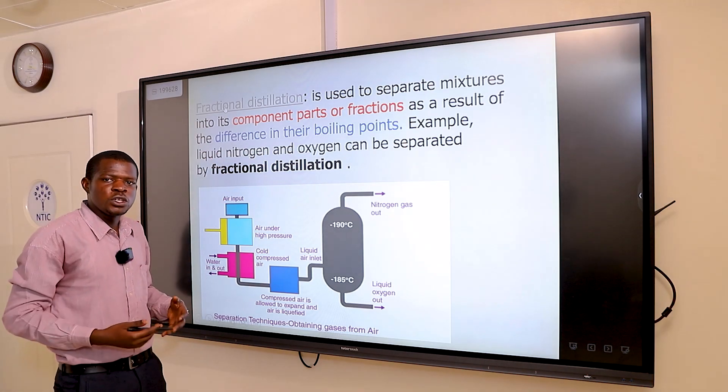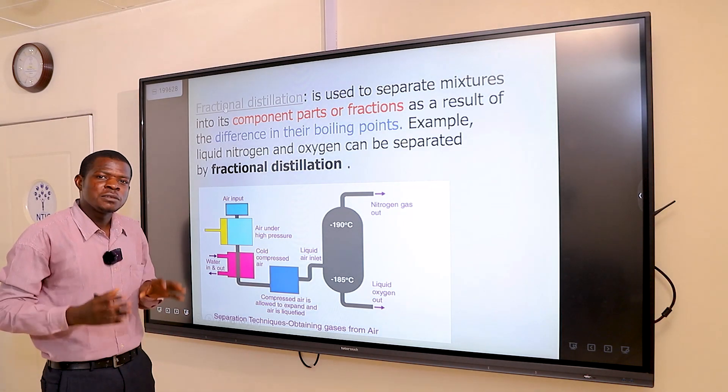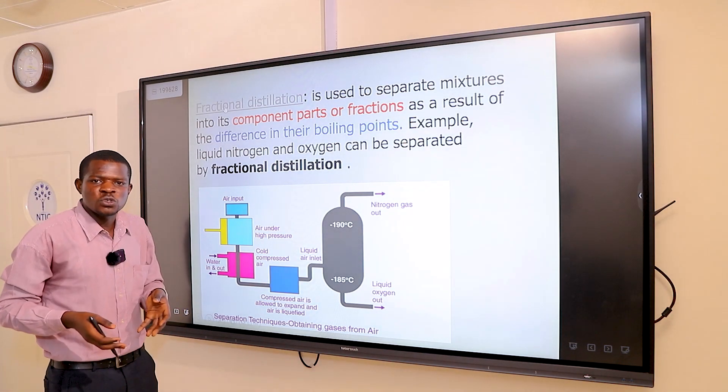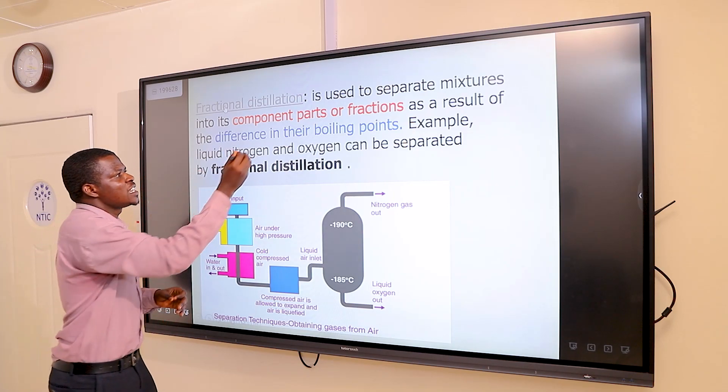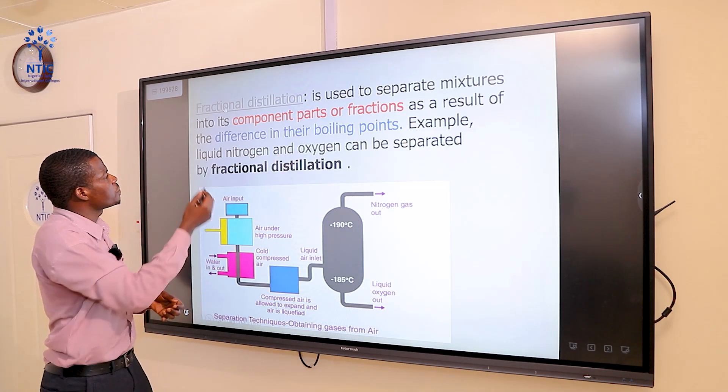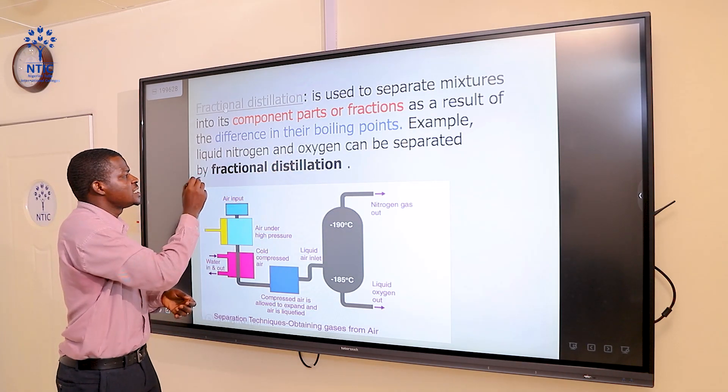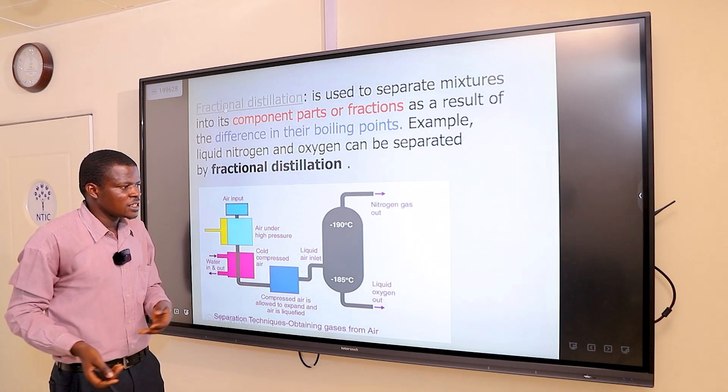Fractional distillation is used to separate mixtures into its components or fractions as a result of the difference in their boiling points. A very good common example we know is petroleum. Petroleum has several components, and these components can be separated by fractional distillation because they have differences in their boiling points.